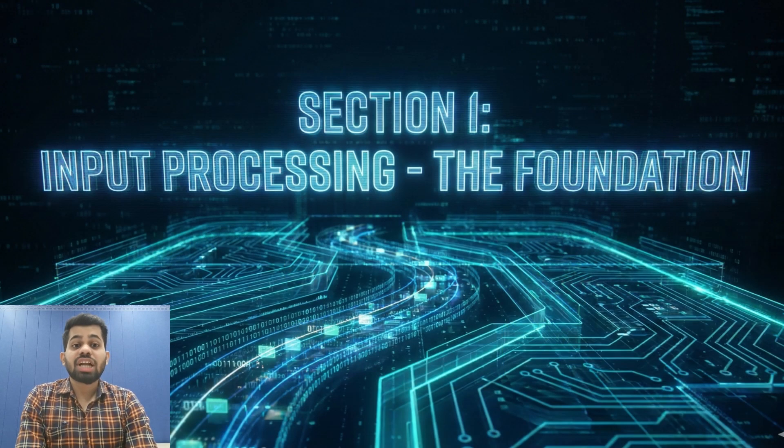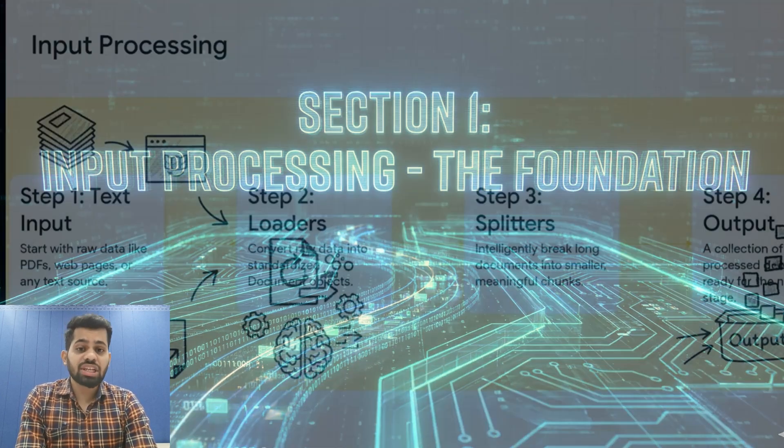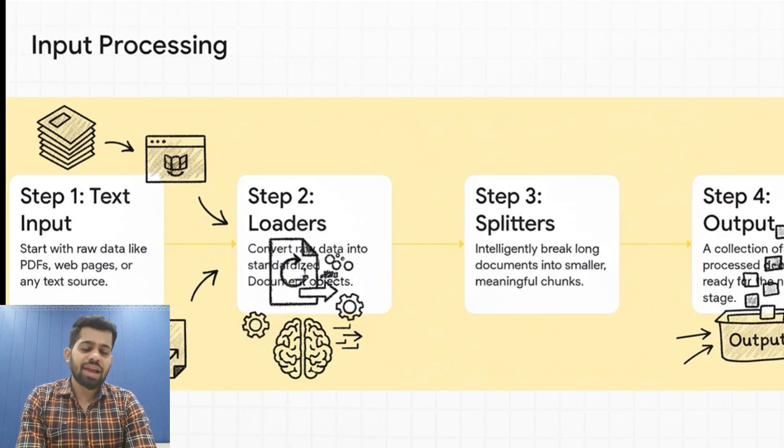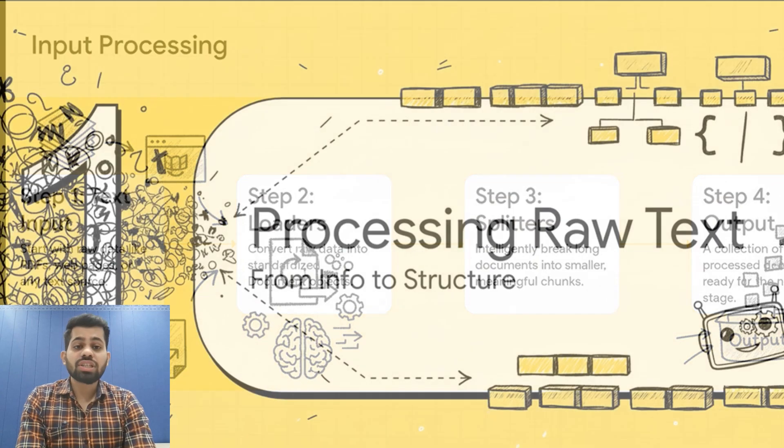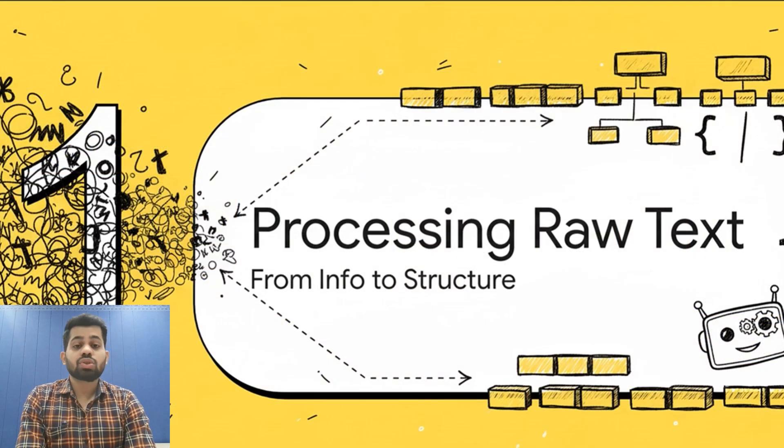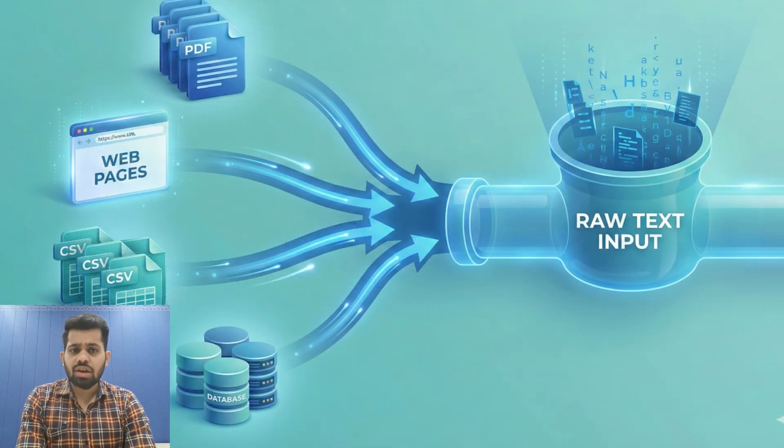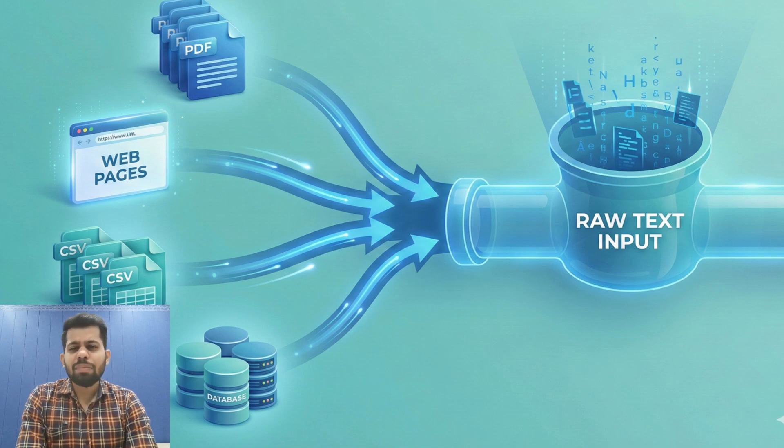Every application starts with data. Input processing is the crucial first step where external information is prepared for the language model. First you have raw text input. This could be PDFs you want to analyze, web pages you want to extract information, documentation files, database dumps - it can be any text source.